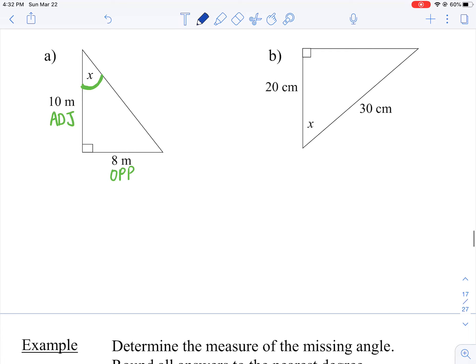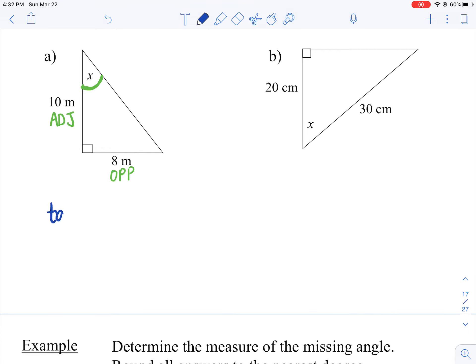that's tangent. So you're going to go tan. Now right next to your trig function normally goes the angle, but we don't know what it is. So you're going to just have to sub the X in. Equals, now you're going to write your ratio. So for tangent, O divided by A, so 8 over 10.